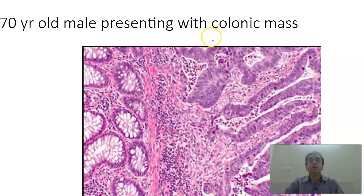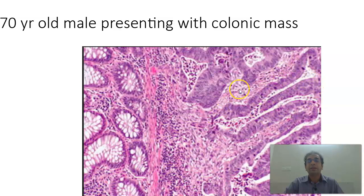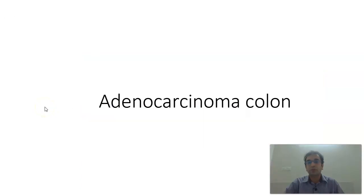Next, a 70-year-old male presenting with a colonic mass. At the MBBS level, a 70-year-old male with a colonic mass — you are dealing with an adenocarcinoma probably. What you find here is normal colonic tissue alongside atypical malignant glands with high nucleocytoplasmic ratio, nuclear stratification, and hyperchromasia. They are more darkly stained compared to the normal colonic glands. These malignant glands do not have mucus within them. This is the adenocarcinoma of the colon.